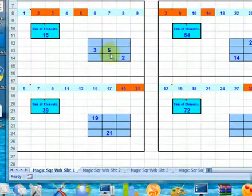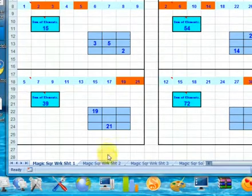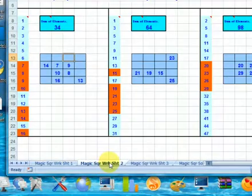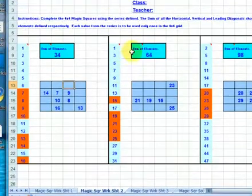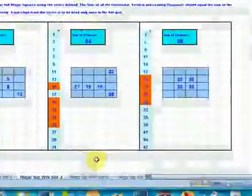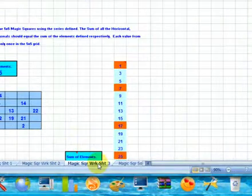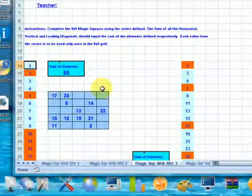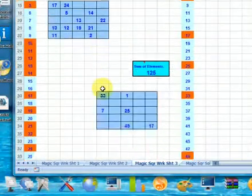MagicSquareWorksheet1 consists of interactive 3x3 magic squares. MagicSquareWorksheet2 consists of interactive 4x4 magic squares. MagicSquareWorksheet3 consists of interactive 5x5 magic squares.